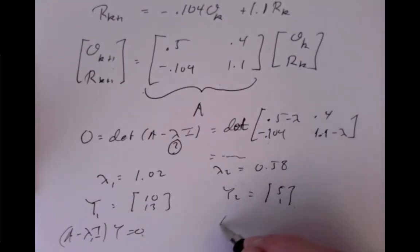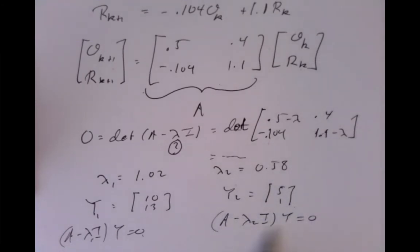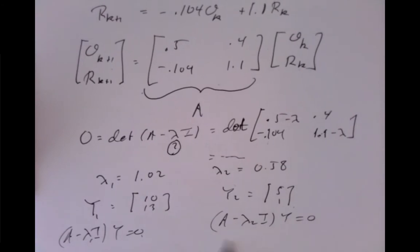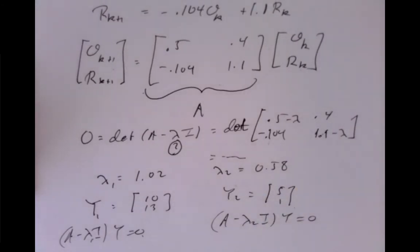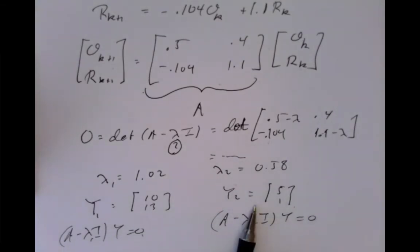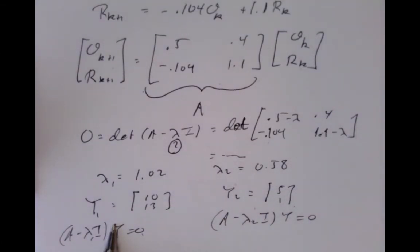And similarly, you'd here calculate A minus lambda_2 identity, y equals 0. Write out that system of linear equations, calculate out the solutions, and find that all the solutions are just multiples of this one particular solution. So that's how we would find the y_1 and the y_2, by solving those linear systems, and we'd come up with that, and that is the solution up to rescalings.